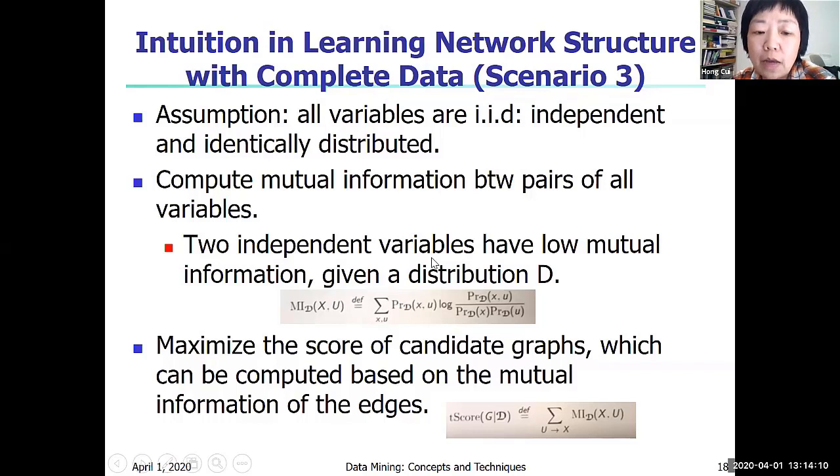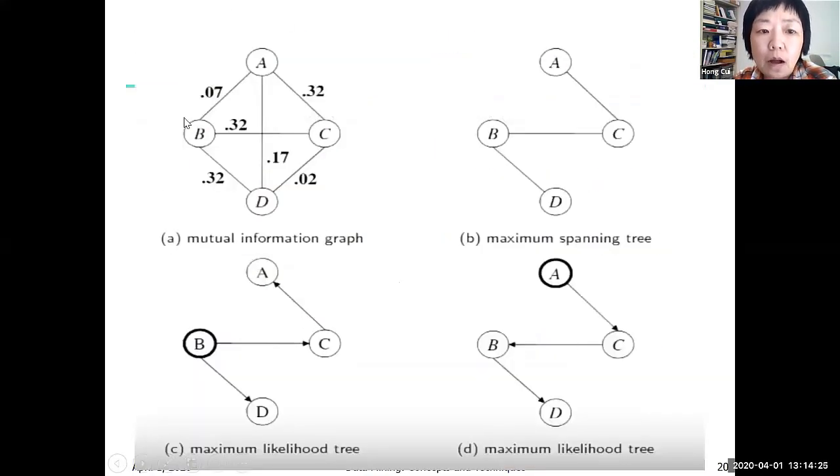If these two variables are somehow dependent, their mutual information given under this distribution D will be higher. So with that information, we can connect all the variables that we have in this network and we write our mutual information scores on the edges.